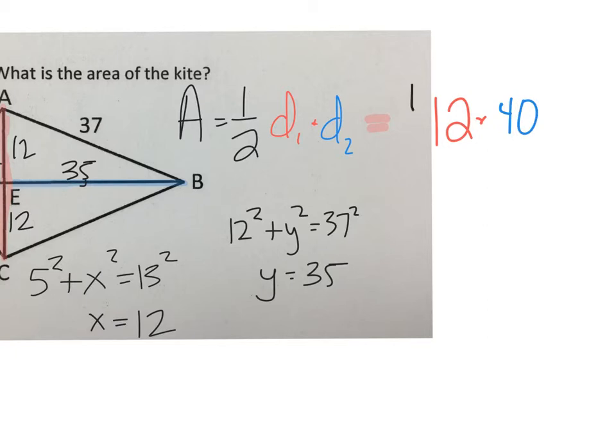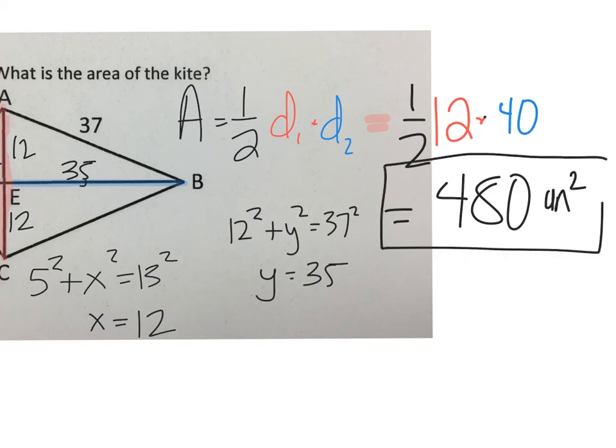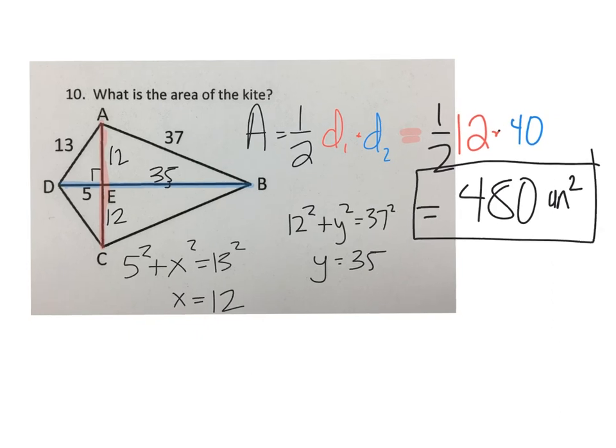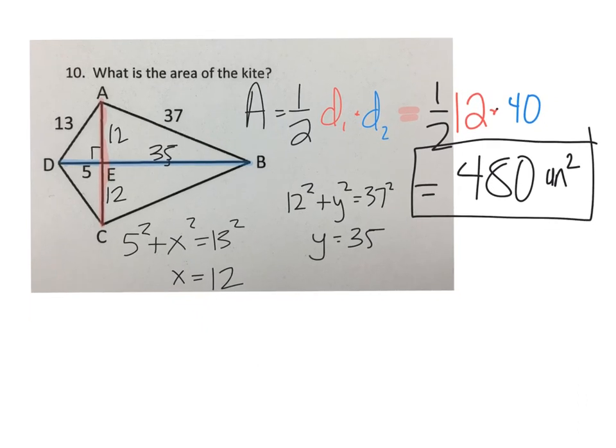I've made that mistake before. So now when we do one-half of 12 times 40, we get an area of, let's see, 12 times 40 is 480 square units for the area of that kite. Voila!